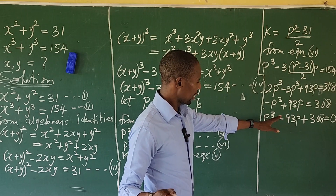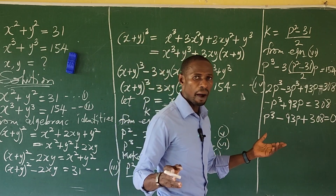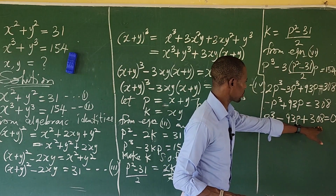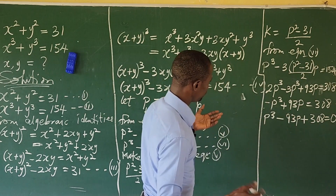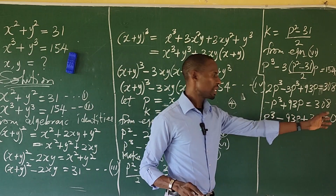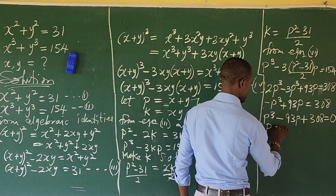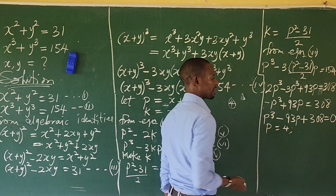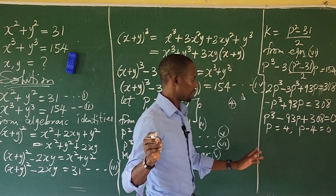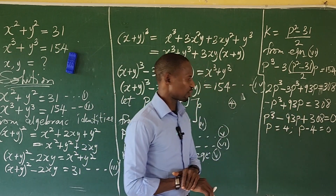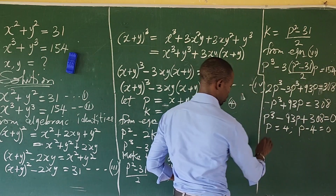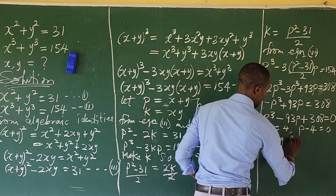To solve this polynomial equation, we use the trial and error method. We test factors of 308, and we find that P equals 4 gives zero. So P − 4 equals 0 is one factor. To find the other two factors, we use the long division method, dividing the polynomial by (P − 4).